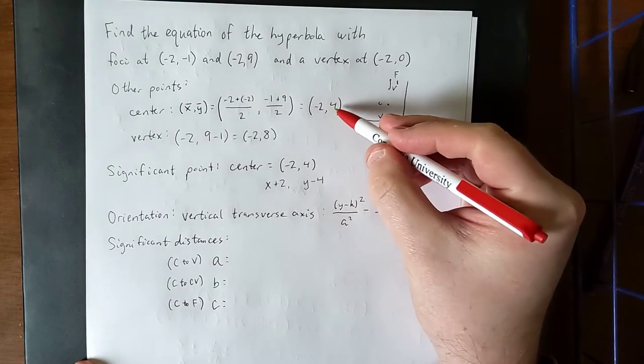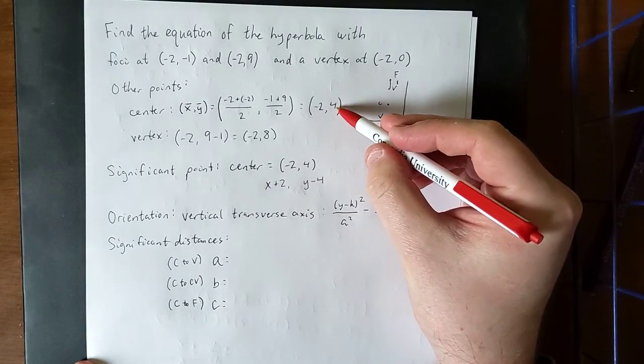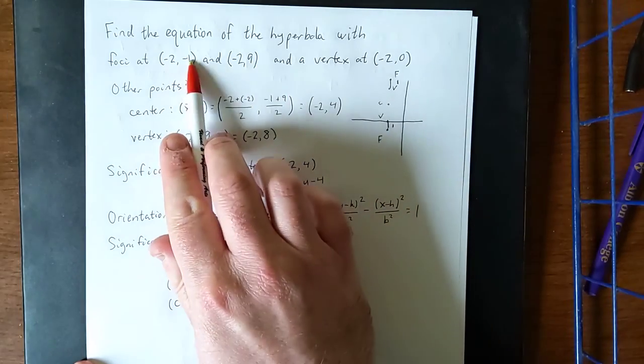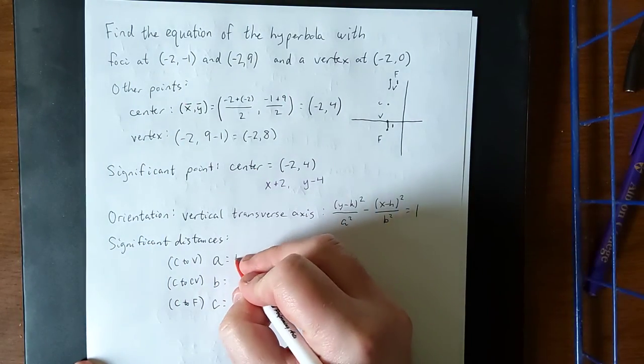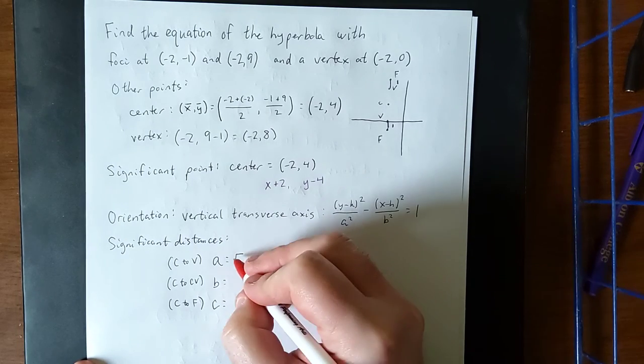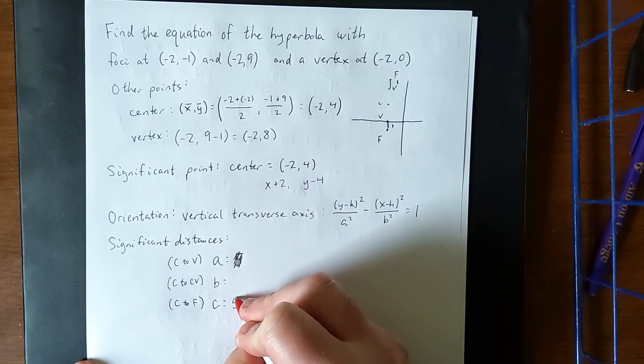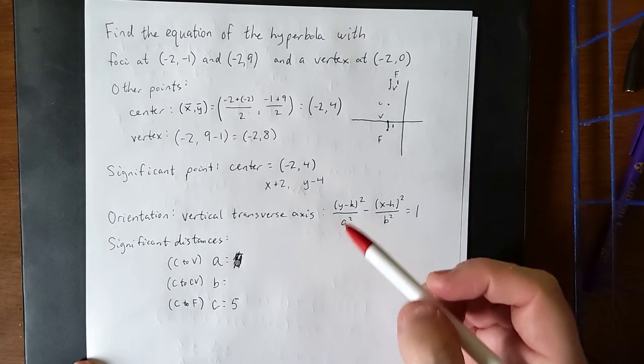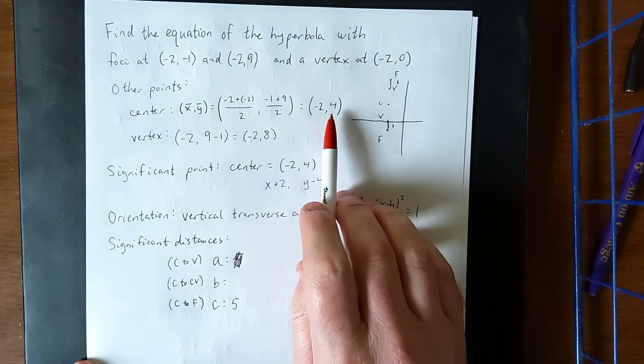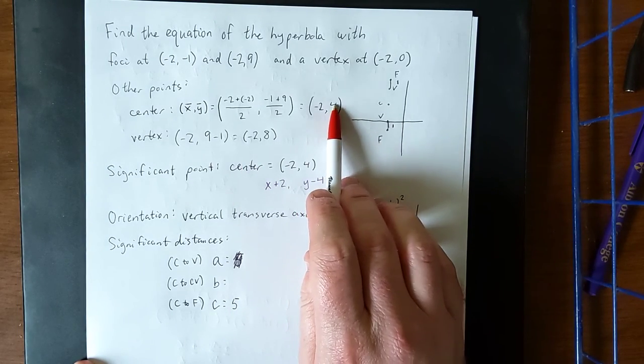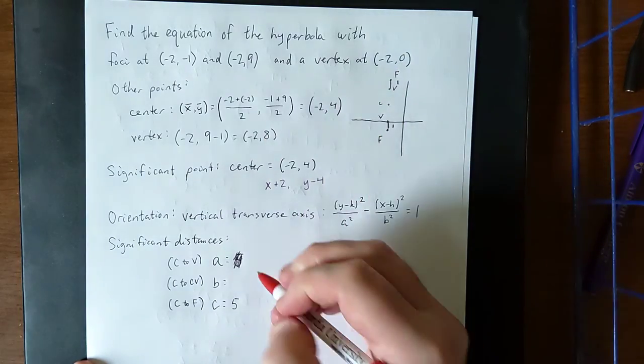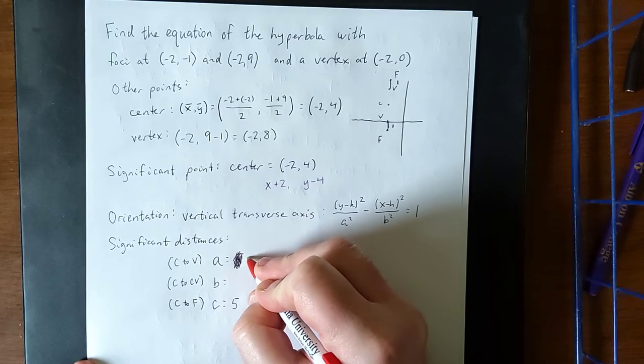Now two of these we can get directly from the graph. The center is at (2, 4). The distance to either of the foci would be the same as the distance from 4 to 9 or from 4 to -1. And in either of those cases, that would be equal to 5. The distance from the center to a vertex would be the same as the distance from either 4 to 8 or from 4 to 0. That lets us know that our a value is going to be 4.